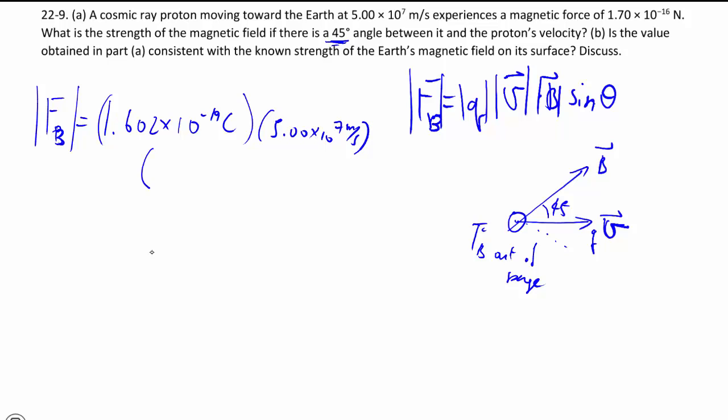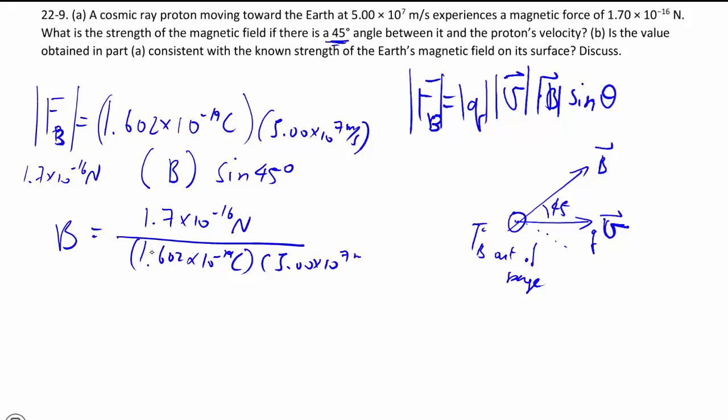And then my magnetic field is what I'm trying to find with the angle of sine 45. The force here is 1.7 times 10 to the negative 16 newtons, so rearranging, we can get 1.7 times 10 to the negative 16 newtons divided by all that.